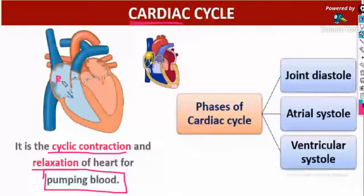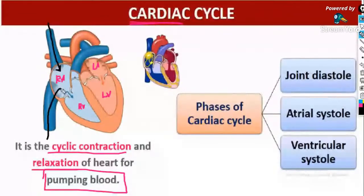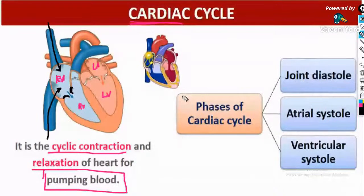Look at this diagram carefully — right atrium, right ventricle, left atrium, left ventricle. The deoxygenated blood from the upper and lower parts of the body comes to the right atrium. There is a valve that prevents the backflow of blood on the right side of the heart. It is the tricuspid valve.